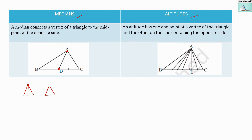If we take vertex B, then the opposite side will be AC. If ABC is our triangle and we take C as a vertex, then the opposite side will be AB. In each triangle we will get three medians. You can see there are three medians for one triangle, each connecting a vertex to the midpoint of the opposite side.